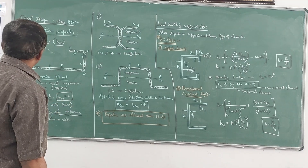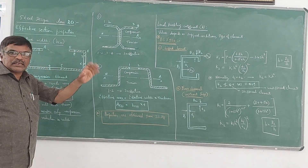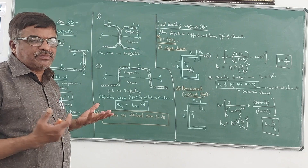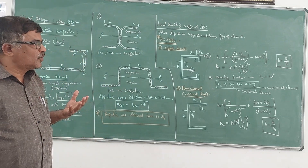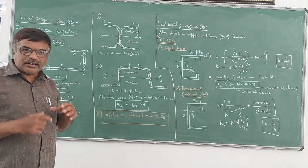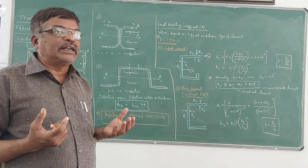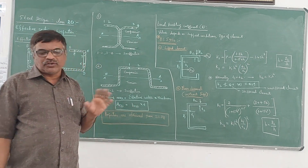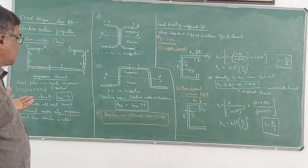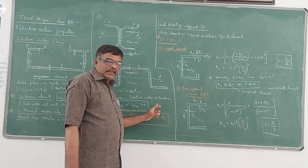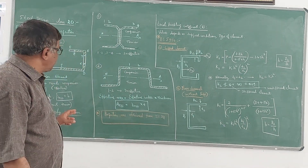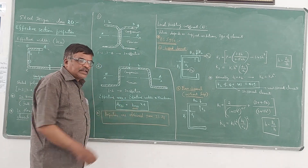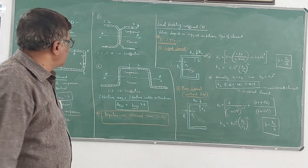In this class, we will discuss about the effective section properties in a cold-formed steel section because this concept is very important. In cold-formed steel sections, the entire width of the section will not effectively take the compressive load or moment. We have to calculate the effective width of that particular section, and that effective width should be multiplied by the corresponding thickness of the element to get the effective area.